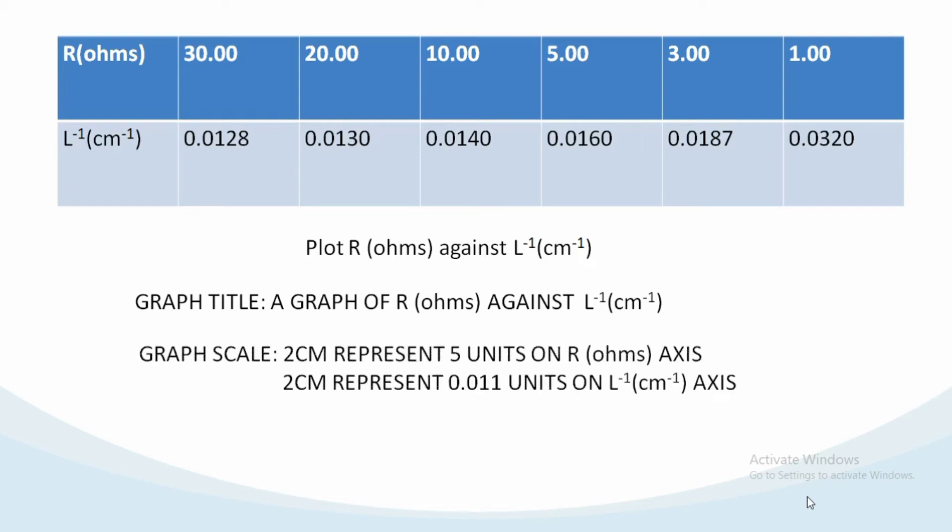2cm to represent 0.01 units on length inverse axis. That is on the horizontal component we have 0.011, 0.012, 0.012, 0.014. So that's how you lay your scale.